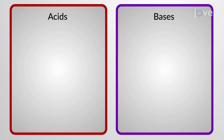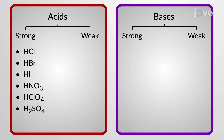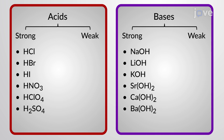Acids and bases can be categorized by whether they are a strong acid, a strong base, a weak acid, or a weak base. There are very few strong acids and bases, so the majority of acids and bases are weak.